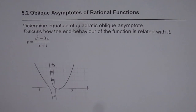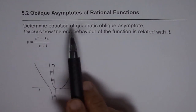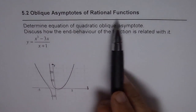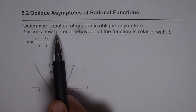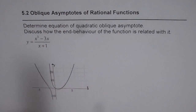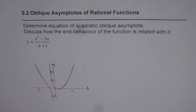I am Anil Kumar and in this video we will understand the concept of quadratic oblique asymptote. This is section 5.2 on oblique asymptotes of rational functions. The question is to determine the equation of the quadratic oblique asymptote and discuss how the end behavior of the function is related with it.